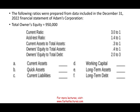We have the following ratios from the December 31st, 2022 financial statements of Adam Corporation. Total owner's equity is $950,000. They are giving us the values for certain ratios — the current ratio and the acid-test ratio — and asking us to compute: current assets, quick assets, current liabilities, working capital, long-term assets, and long-term debt. These ratios are not comprehensive — this is not all the ratios you are responsible for on the exam. But if you can wrap your head around these, you should be okay with other ratios.